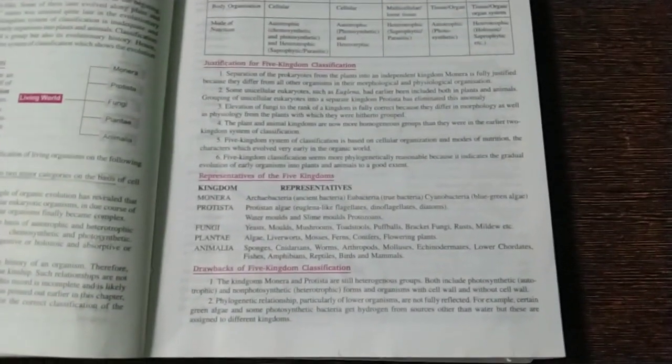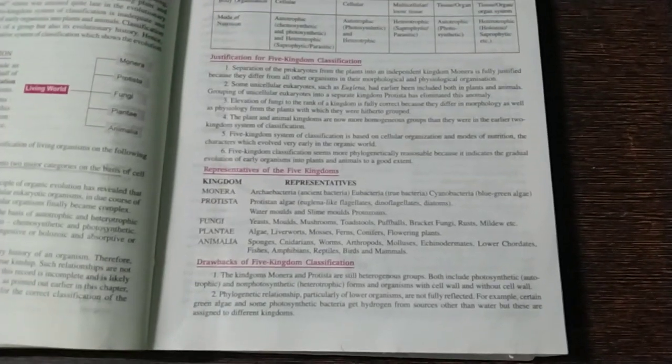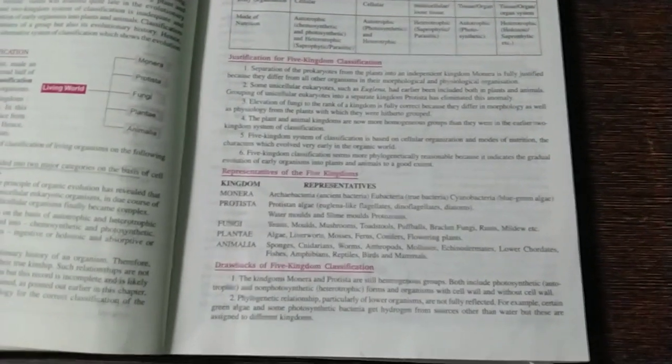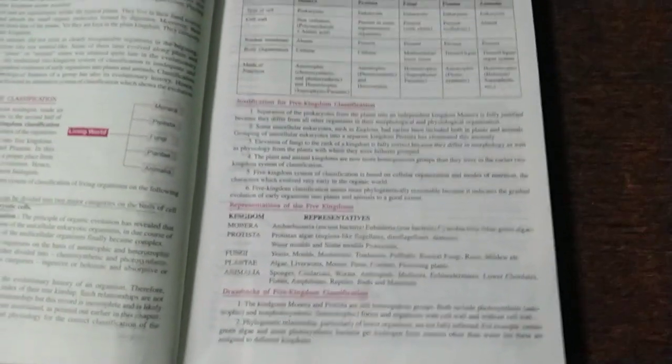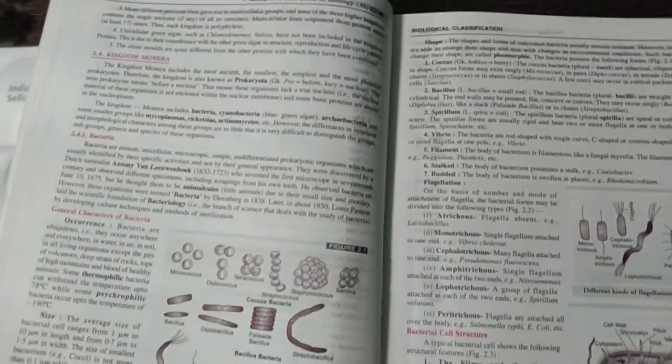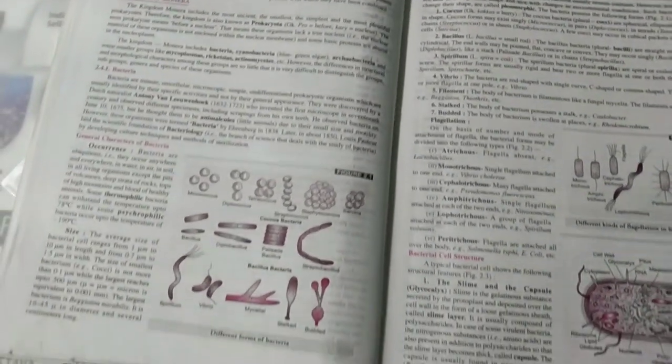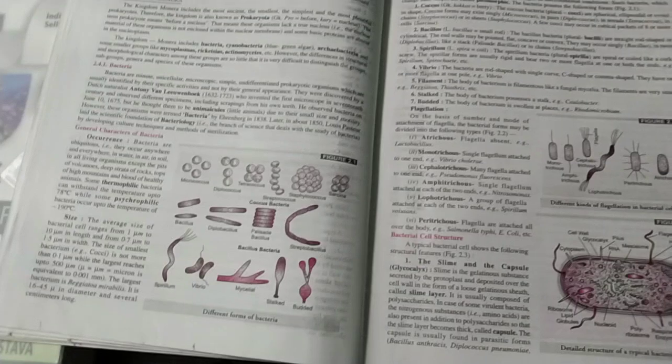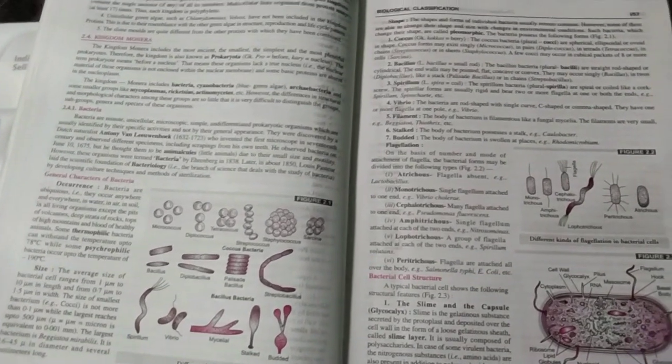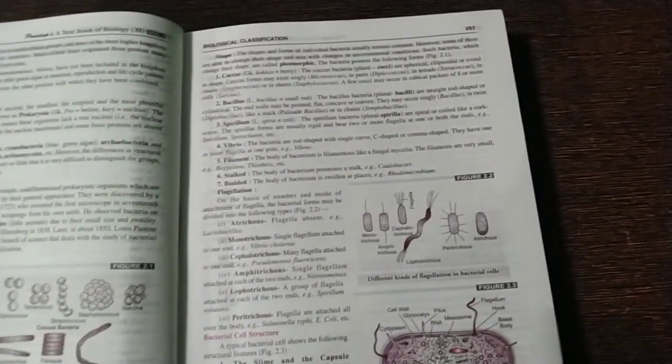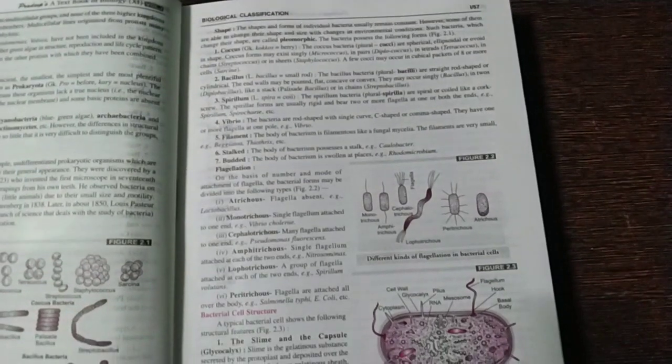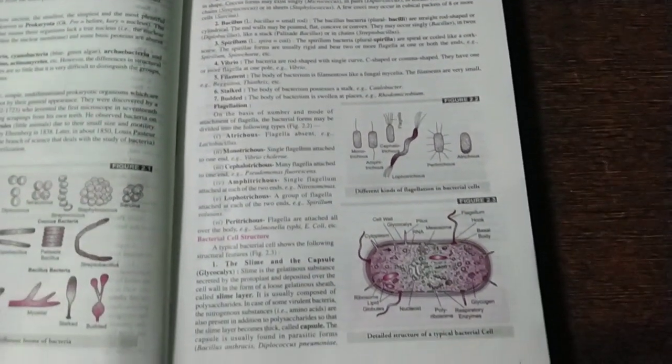And then representatives of five kingdom classification. Drawbacks. These drawbacks, I think, maybe it is given, but I think it's not there in NCERT. Let's come to the next page. It's kingdom Monera is there. And then its occurrence, size, everything is given very deeply. If you wanted to have a broad knowledge about all these, you should buy this book.